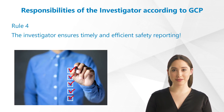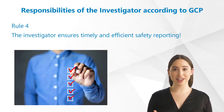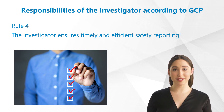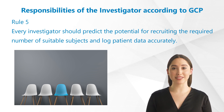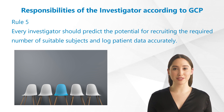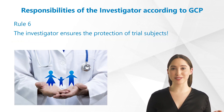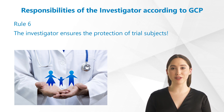Rule 4: the investigator ensures timely and efficient safety reporting. Rule 5: every investigator should predict the potential for recruiting the required number of suitable subjects and log patient data accurately. Rule 6: the investigator ensures the protection of trial subjects.